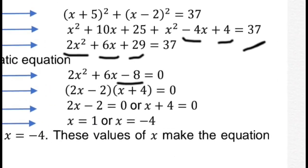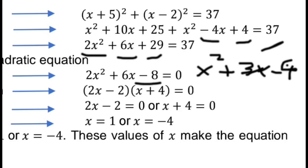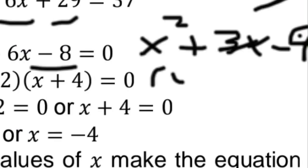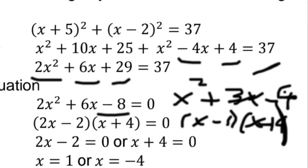Simplify by dividing everything by 2: x squared plus 3x minus 4 equals 0. Factor this: find numbers that multiply to negative 4 and add to 3 — that's negative 1 and 4. So the factors are x minus 1 times x plus 4 equals 0. Applying the zero product property: x equals 1 and x equals negative 4.